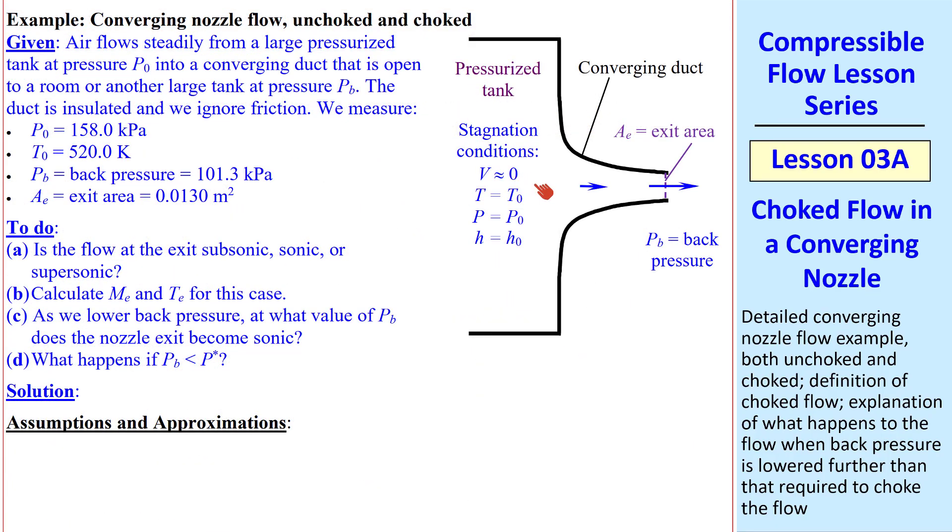Consider air flowing steadily from a large pressurized tank through a converging duct, and this duct is open to a big room or another large tank where the back pressure is set. The duct is insulated, and we're ignoring friction along these walls. We're given P-naught, T-naught, and the back pressure, and also the exit area, which is here and we'll call AE.